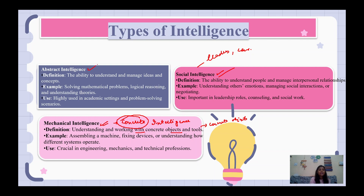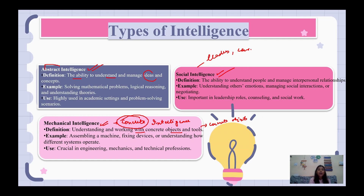Now let's talk about abstract intelligence. Abstract means things we cannot see or feel. In simple terms, abstract refers to ideas, thoughts, and concepts that are not tangible. Abstract intelligence is the ability to understand and manage ideas and concepts — the ability to work with abstract thinking.